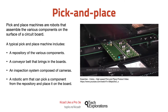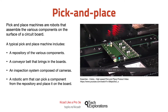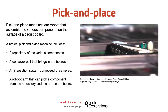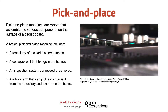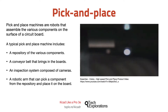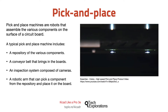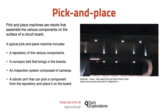Pick and place machines are robots that assemble the various components on the surface of a circuit board. When you contract a manufacturer to not only make your boards but also to populate them, they will be using a pick and place machine. In the video that is playing here, you can see an example of such a machine.